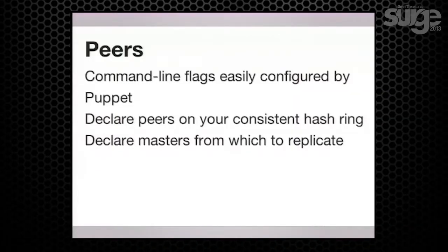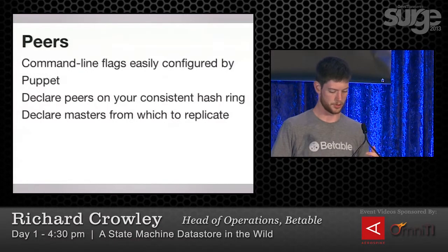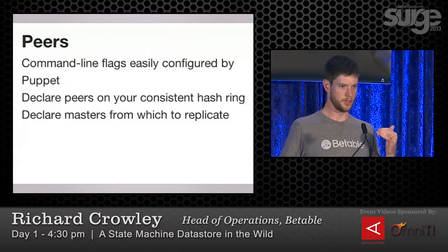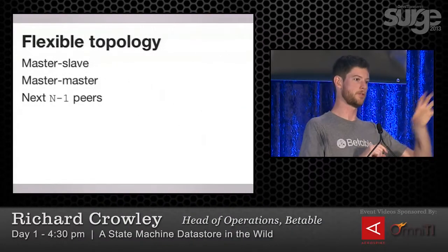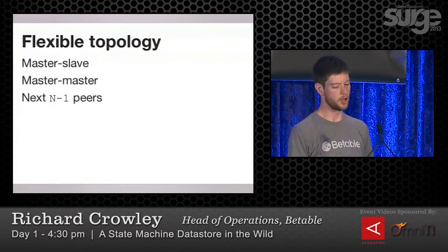What falls out of having coordinators is this ring — a set of peers declared on the command line. We don't have a complicated gossip protocol or any sort of network auto-discovery like Elasticsearch craziness. We just have command line flags, and Puppet knows about every node in our infrastructure and knows how to tell everybody about everybody else. You declare your peers — that's the list of things on the consistent hash ring you're able to route traffic to and receive traffic from. You also declare the list of masters, the list of processes you want to replicate from. This is not a strict master-slave system; there can be multiple masters. That gives us a flexible replication topology: master-slave, master-master, or replicate from the next three guys around the consistent hash ring. In production, we run a three-node cluster where everybody replicates everything and everybody has all the data.